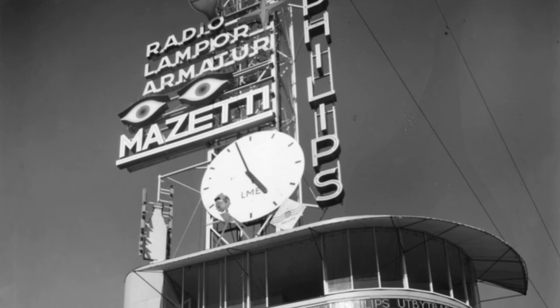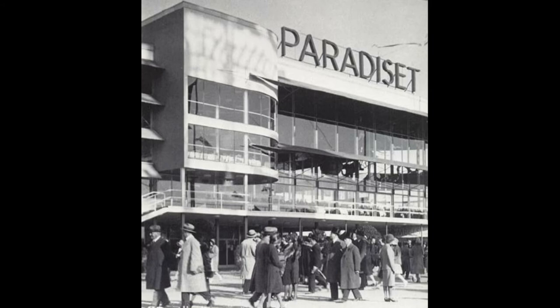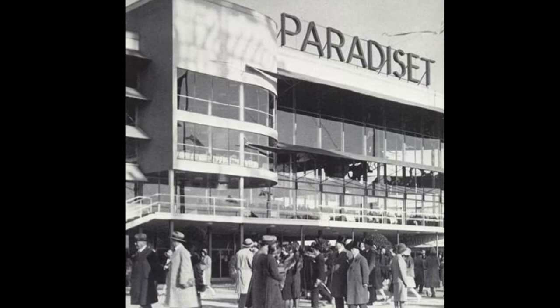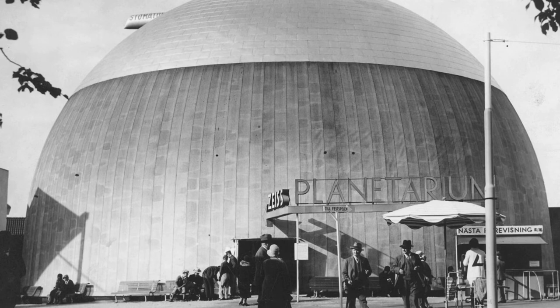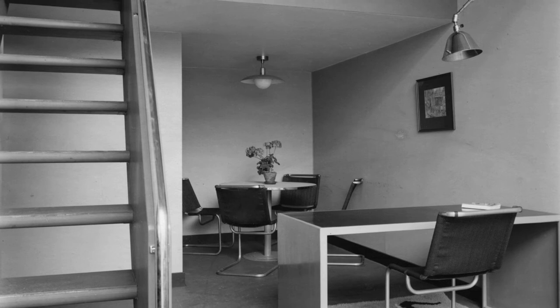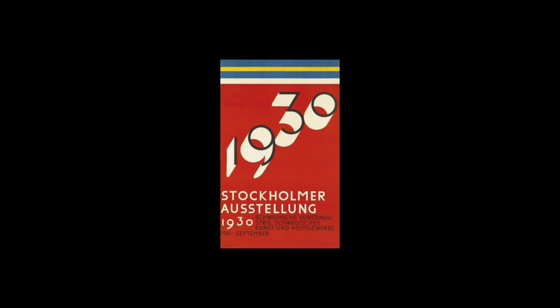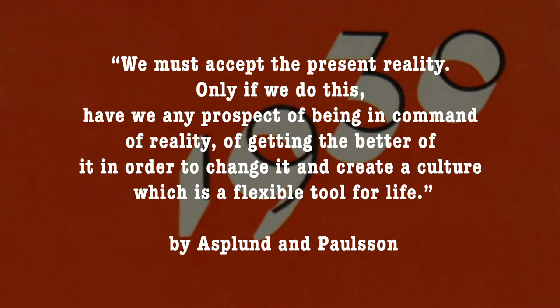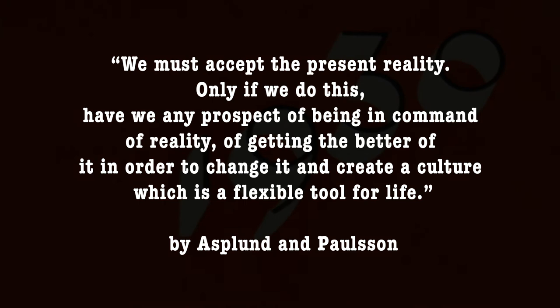Asplund had a strategy for the Stockholm Exhibition that led to setting Swedish functionalism, or 'funkis' — the Swedish term for functionalism — by improving quality urban design such as pavilion and paradise restaurant. It was through this exhibition that the charm of Swedish classicism and tradition was transformed to new forms: simplicity and purity of shapes, silver and glass materials, and stunning colors, describing the revitalization of Swedish grace. The pamphlet published to coincide with the exhibition stated: 'We must accept the present reality. Only if we do this have we any prospect of being in command of reality, of getting the better of it in order to change it and create a culture which is a flexible tool for life.' Asplund further stated there was no need for the old culture's outgrown forms.